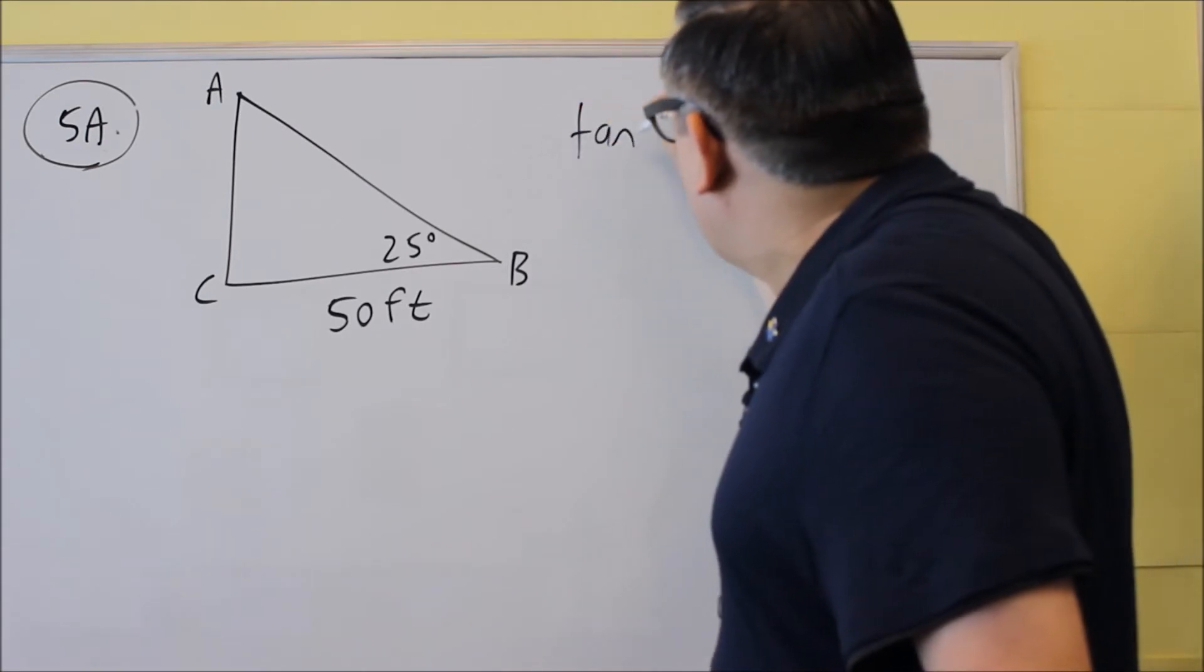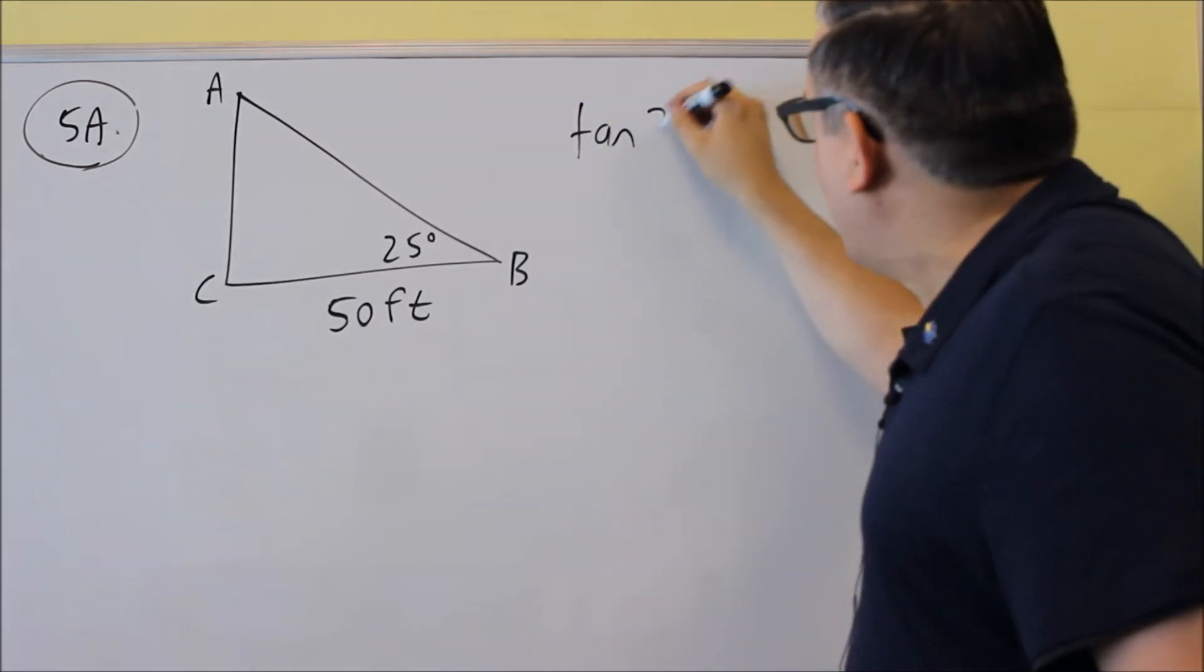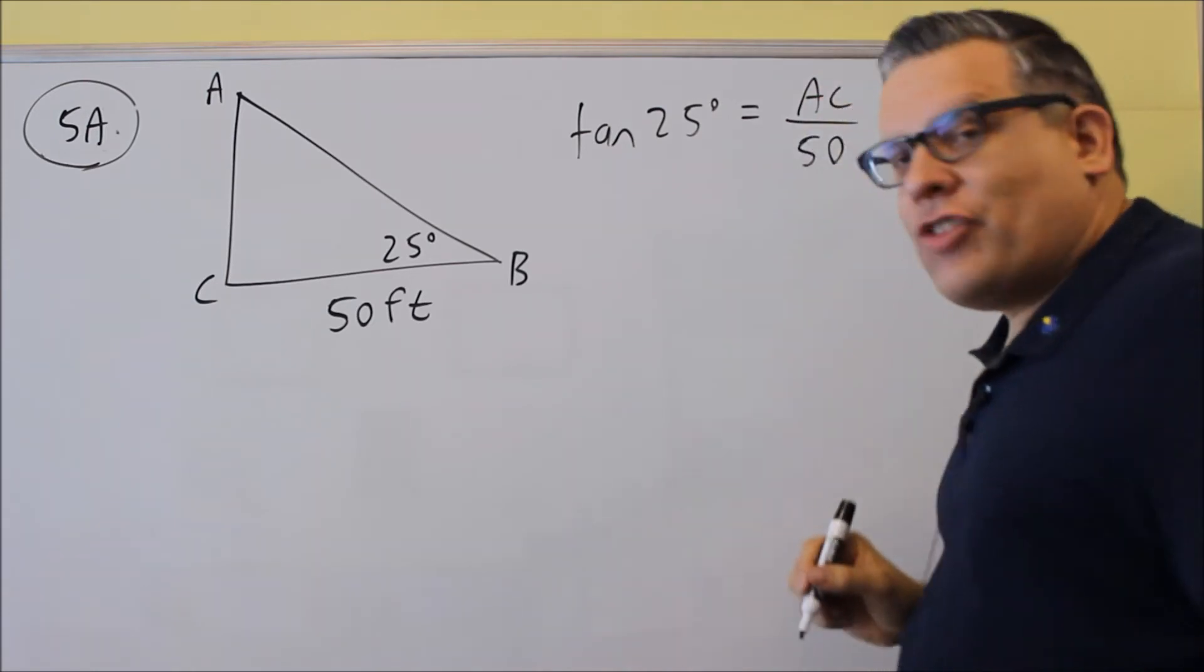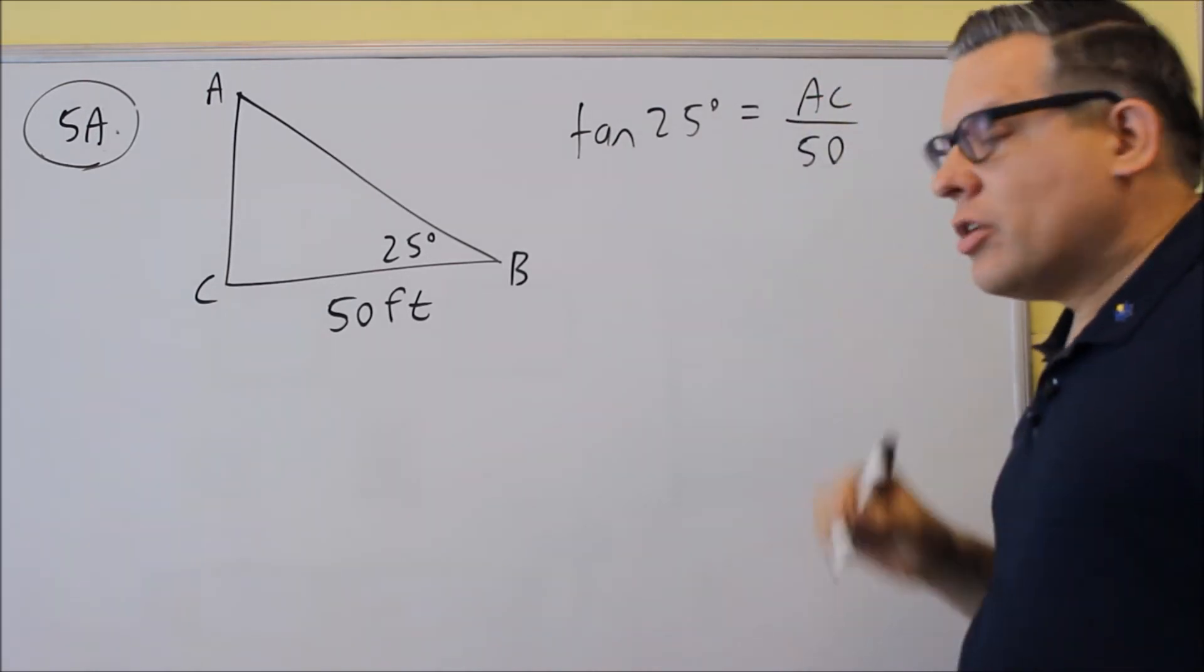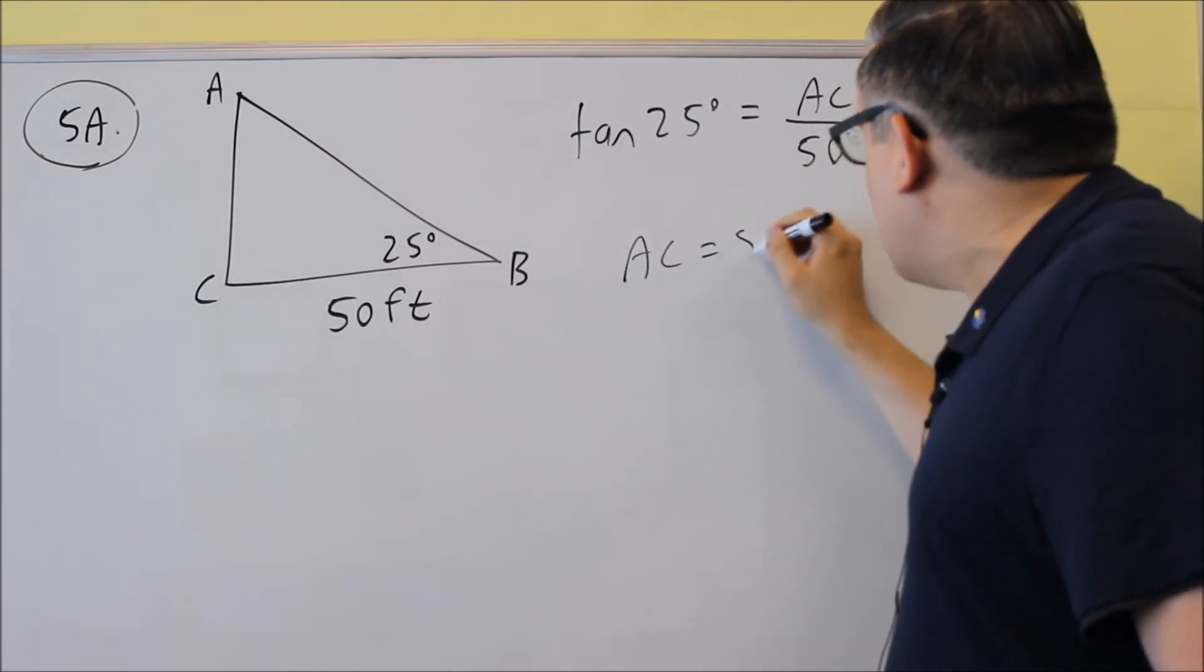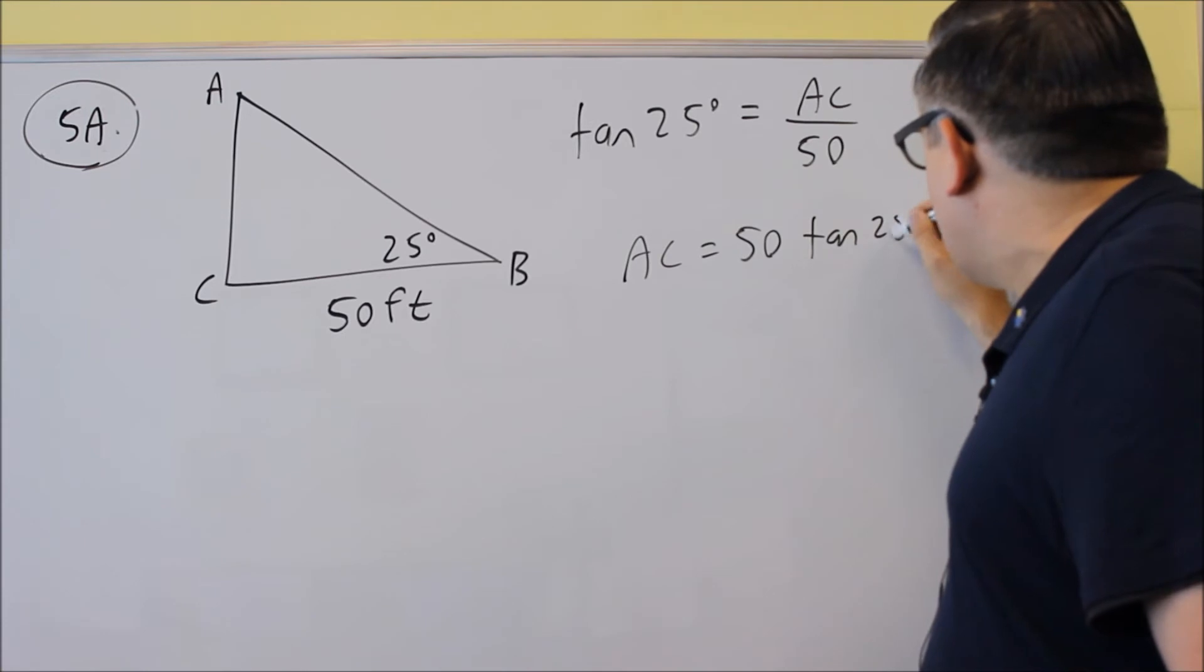Okay, so we're going to start by writing the definition. We're going to do tangent 25 degrees equals side AC over 50. So again, it's opposite over adjacent. We're going to cross multiply, and we'll get AC equals 50 tangent 25 degrees.